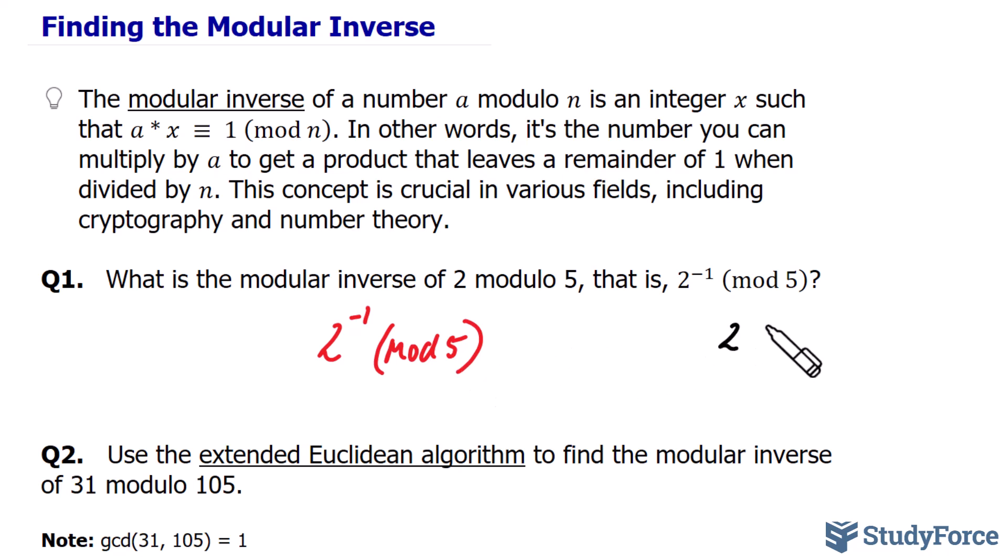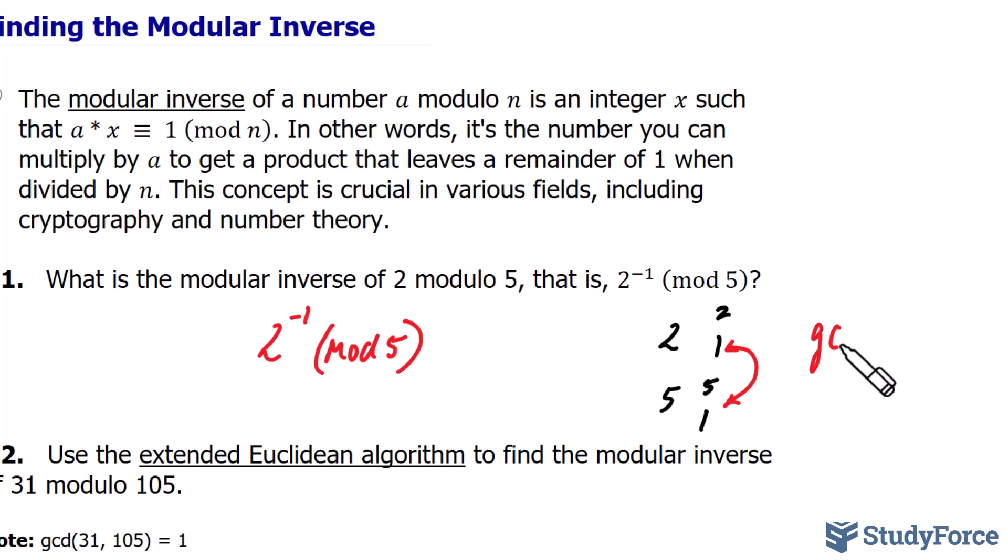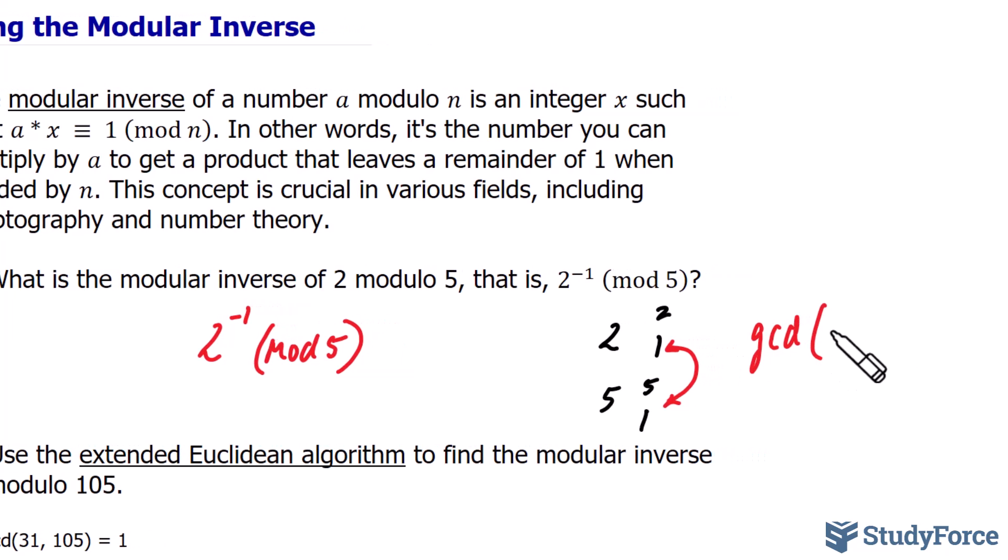The positive integers that divide 2 are 2 and 1, and the numbers that divide 5 are 5 and 1. Notice that the largest number they share in common is 1, and so we say that the GCD, or the greatest common divisor between 2 and 5, is 1. Therefore, a modular inverse does exist.